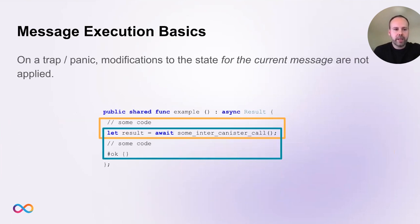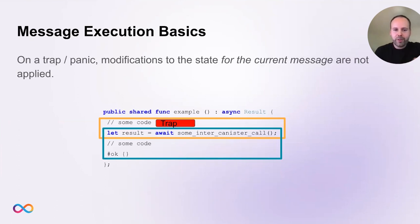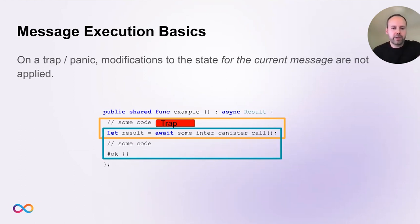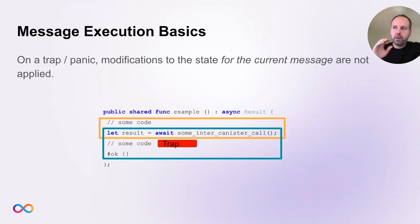Another important fact about message execution: when there is a trap, panic, or exception, modifications to the canister state for the current message are not applied. If some code in a message produces a trap, any changes to the canister state made before that trap happens within that message will not be applied. This holds for both the first message and the callback message. We will see very concrete examples shortly, but this is a very important fact.